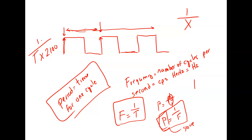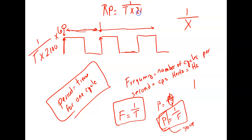And then we're going to take the reciprocal of that. What we've just done is taken the time for one revolution to the rate of time. This is still revolutions per second — so what would we have to do to get revolutions per minute? Multiply this answer times 60. And this will give us RPM. So RPM equals one over time times 2,100, and then multiply times 60.